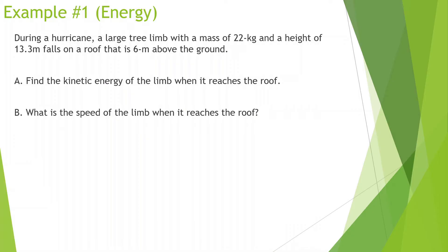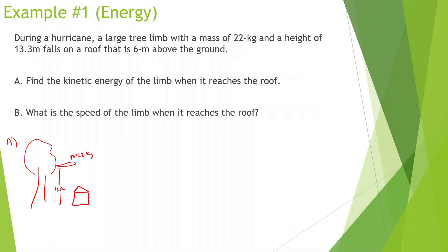Let's look at Example 1. During a hurricane, a large tree limb with a mass of 22 kilograms and a height of 13.3 meters falls on a roof that is 6 meters above the ground. Find the kinetic energy of the limb when it reaches the roof. Let's draw this scenario — we have the limb at 13.3 meters and the house roof at 6 meters above the ground. I like to put the lowest point that the object will reach as the zero line.